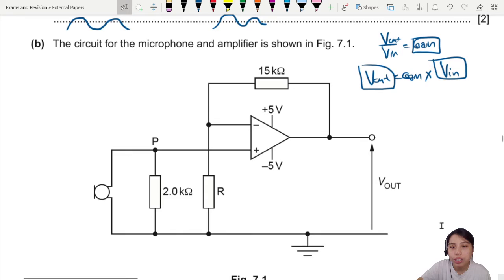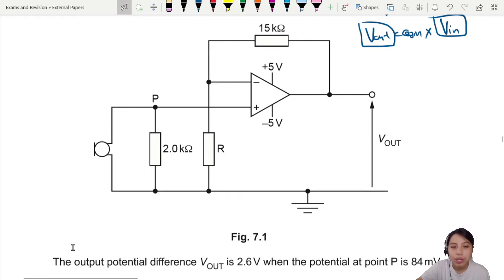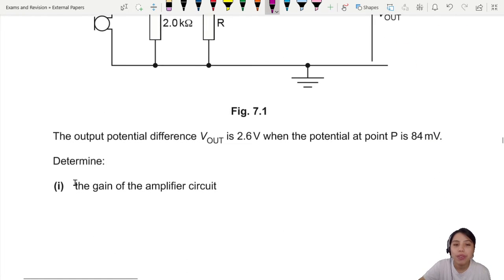Okay, this is two marks. One for talking about the gain. What's the purpose of amplifier? To amplify, so proportional and also same polarity, which is specific for a non-inverting amplifier. Now we talk about gain. Let's actually calculate it from the circuit. So the output potential difference is given to us 2.6 volts. They didn't label, right? No, they didn't label. Okay, never mind. Output potential is 2.6 here. When the potential at P is 84 millivolts.